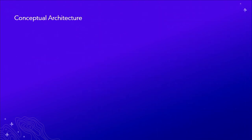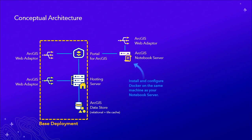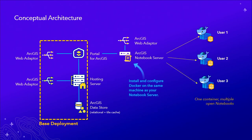This is a conceptual diagram of what Notebook Server looks like. You have a base deployment that could reside on one machine, but in production that's typically a distributed environment. Notebook Server is much like any other server product — it's a separate install. You install it, license it, configure the web adapter, and federate it to portal just like any other server role. As users open notebooks, each user gets their own Docker container — there's no sharing of containers between users.